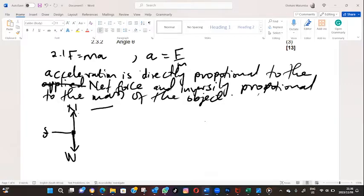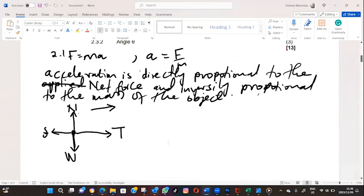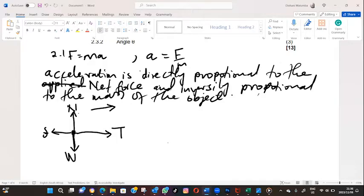Now we are told that there's friction, and because the system is moving to the right, your friction will oppose the motion. It will be moving to the left. And we also have a rope, and that rope is your tension.